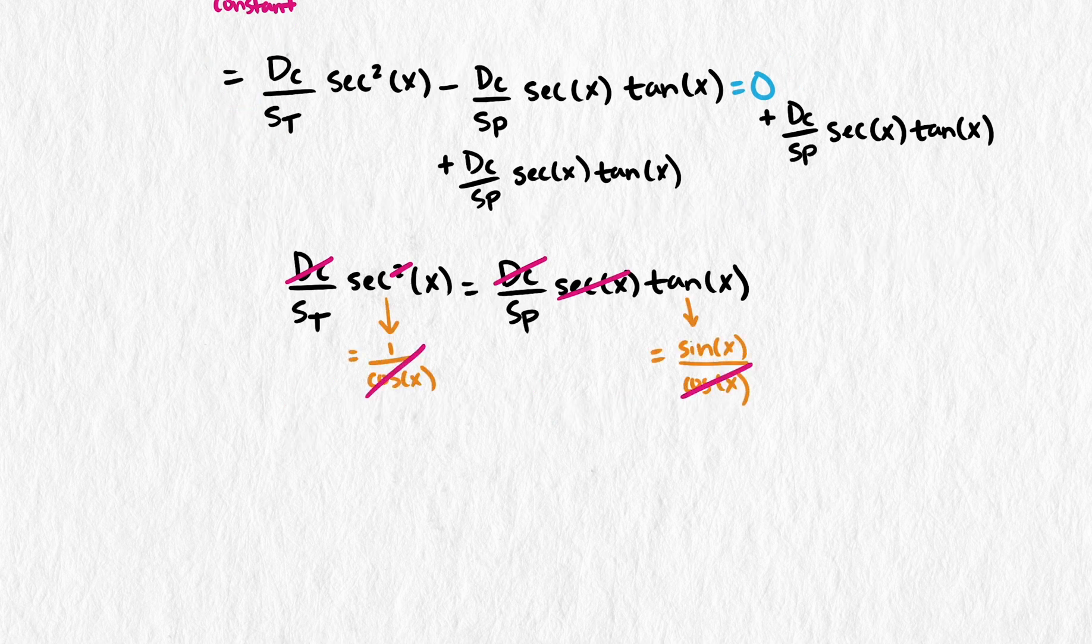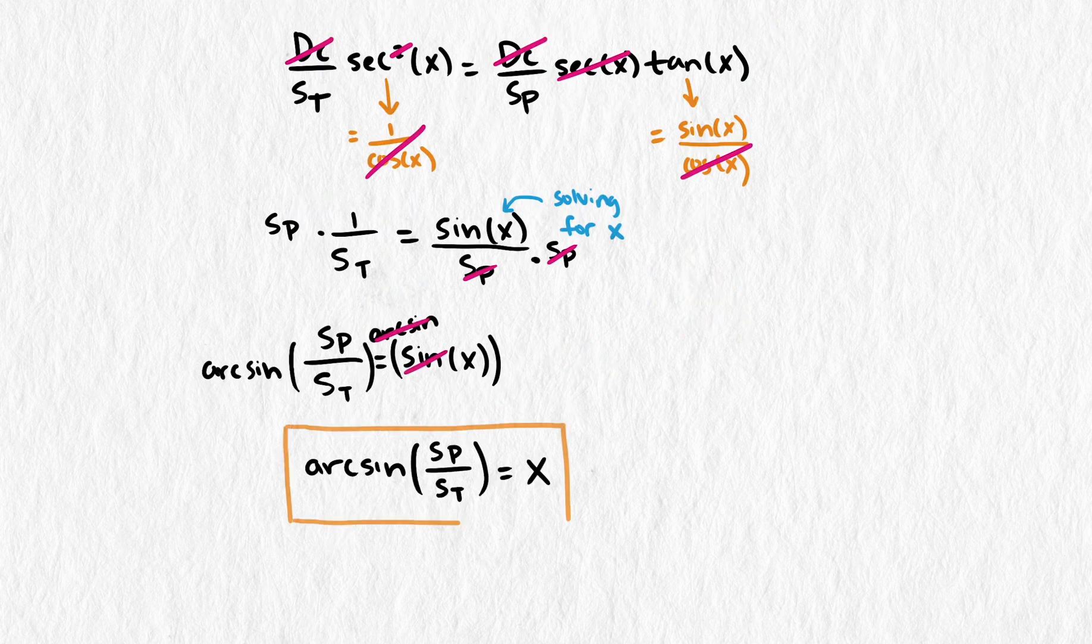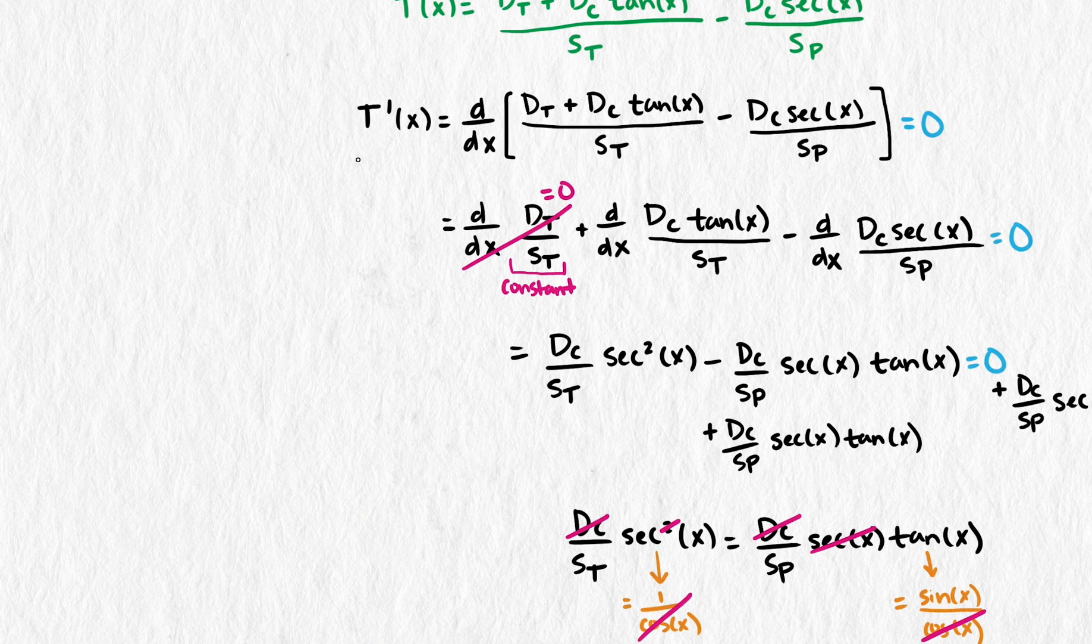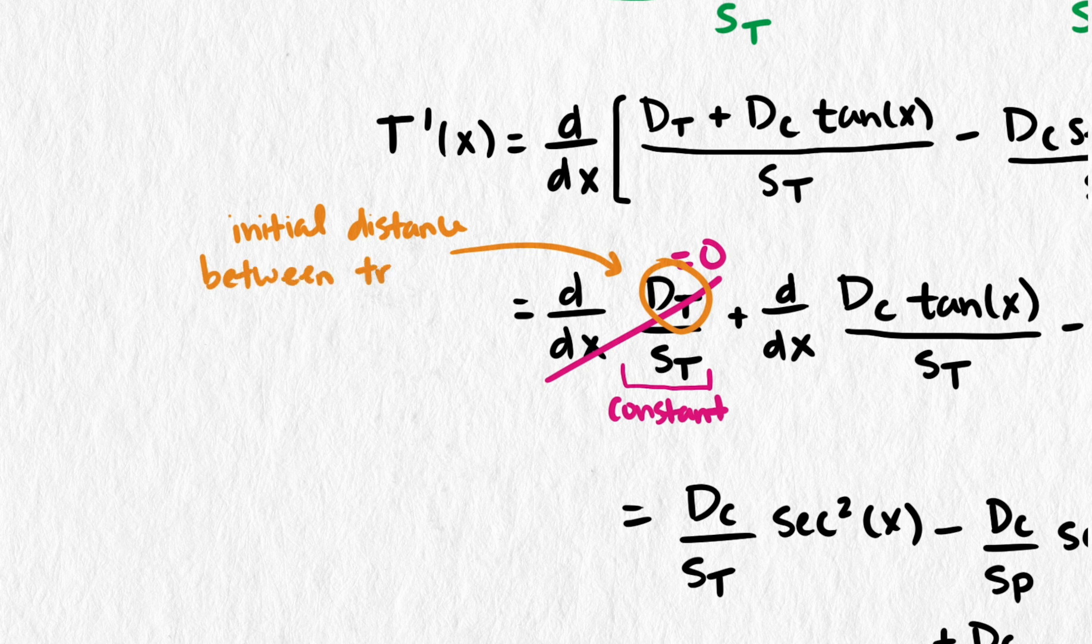Without the numbers, we need to solve algebraically instead. That may seem like a disadvantage at first, but this process helps us to learn a lot about the situation and can result in a formula for the optimal angle that we can apply in other situations. Already, we can notice that the derivative of the function does not depend on the distance between the truck and the pedestrian. That parameter doesn't show up in the derivative, so it can't affect the optimal angle.